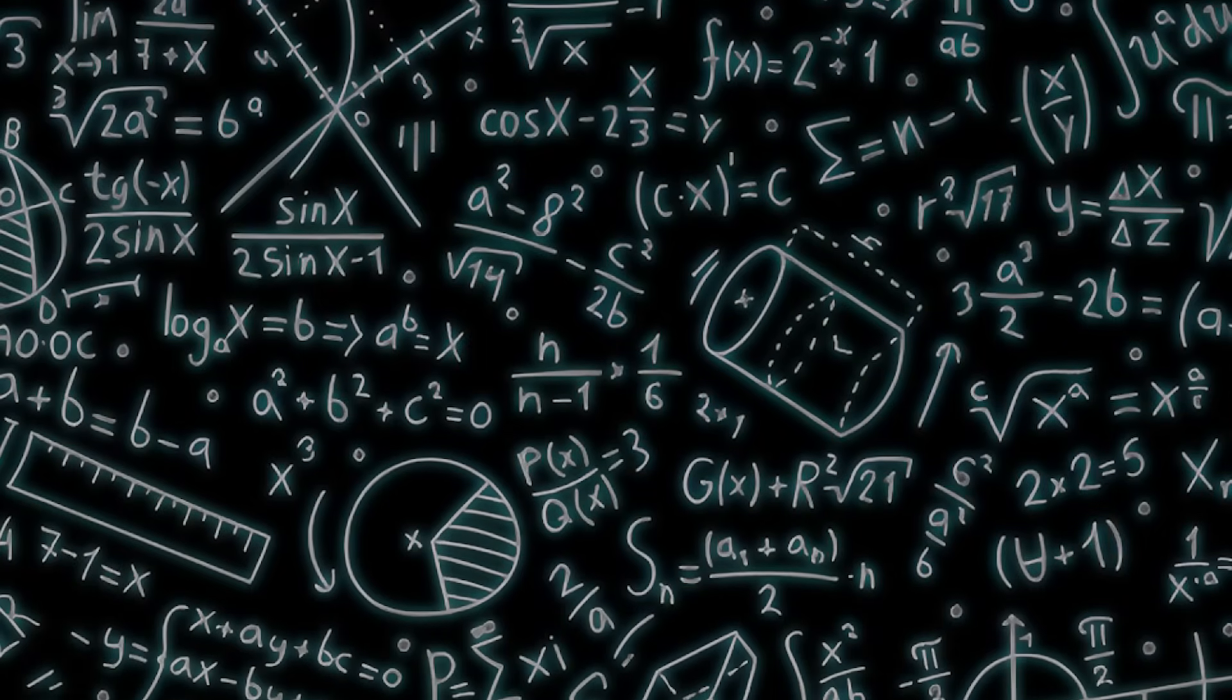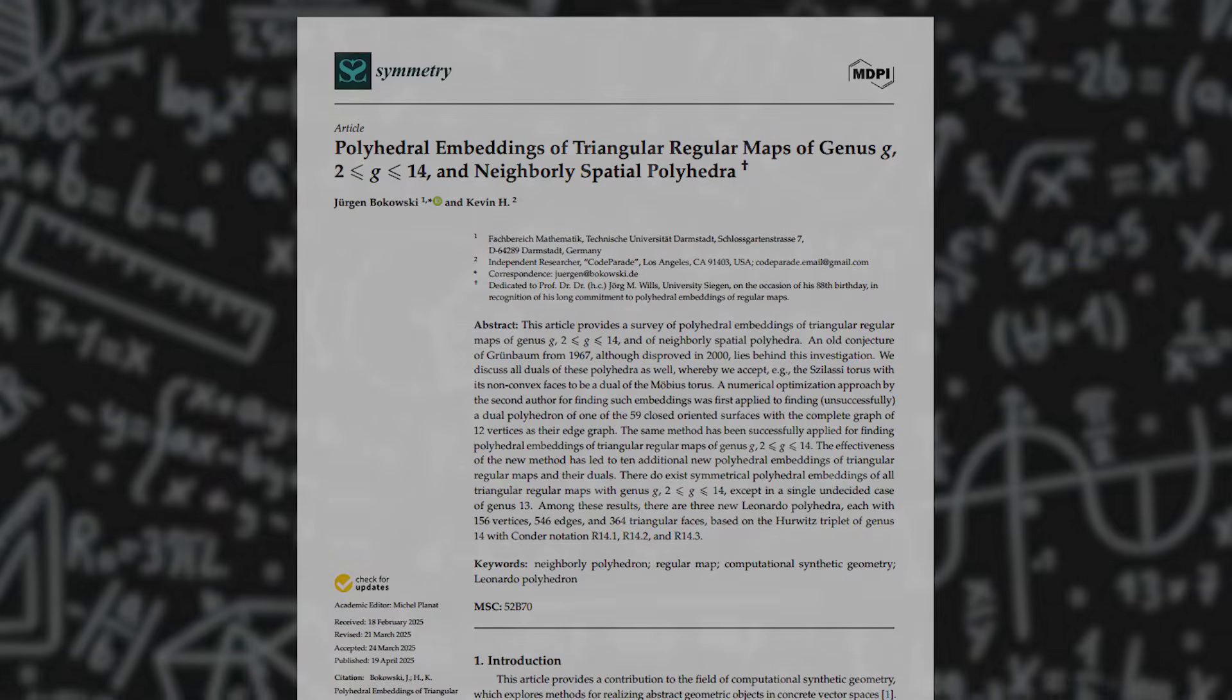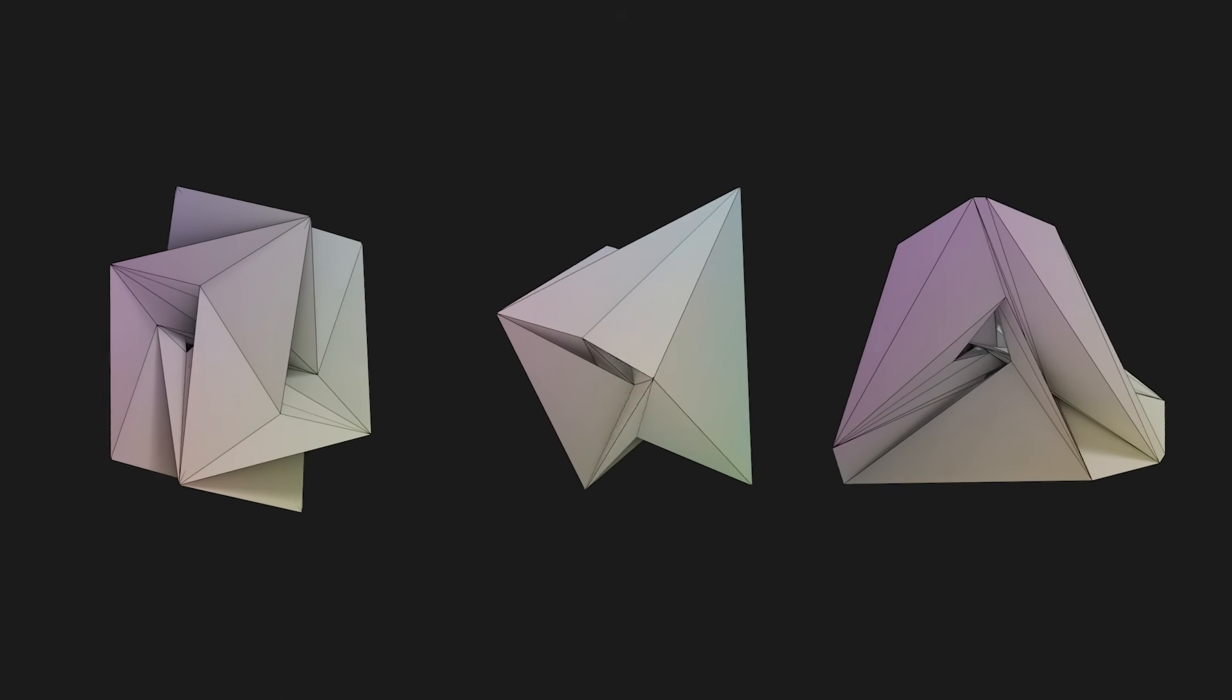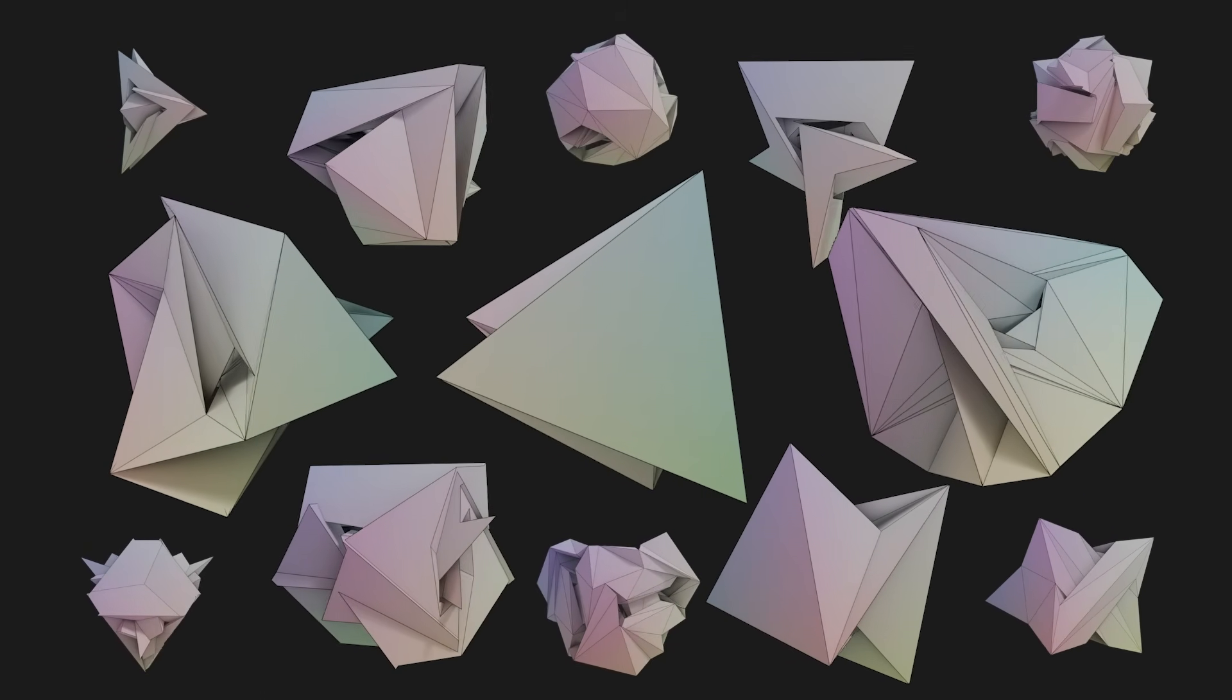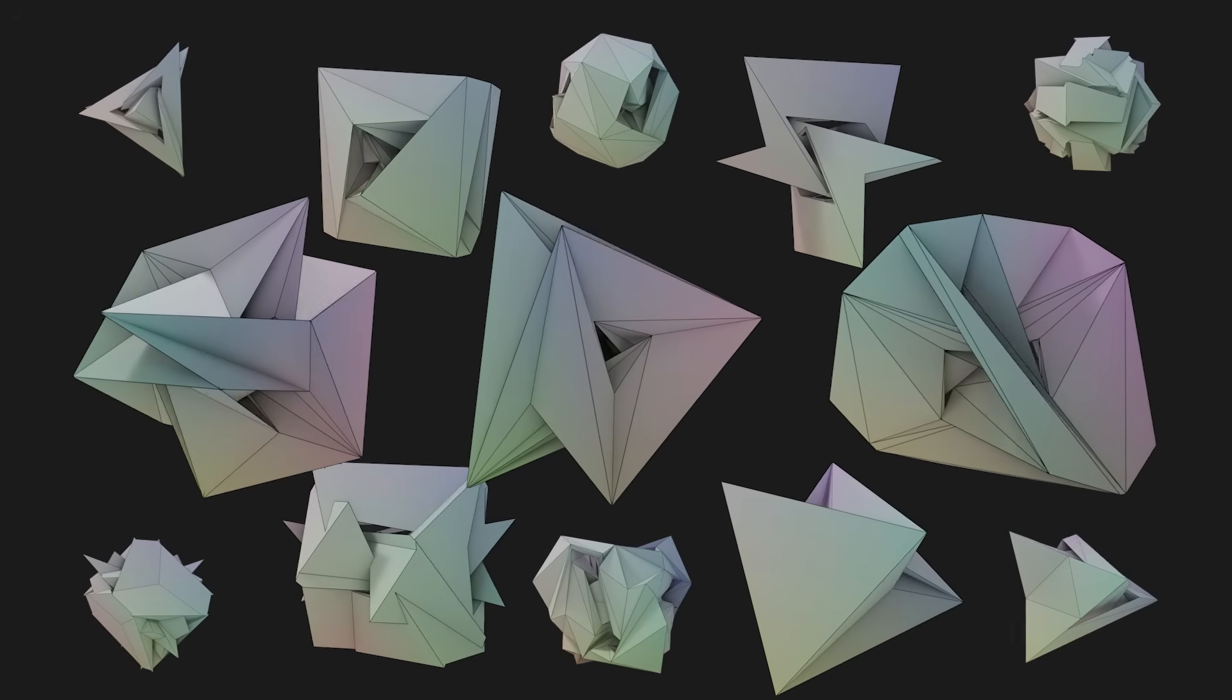Well, it finally happened! I got a math paper published! And I discovered not one, not two, not three or four, but more than 10 new kinds of polyhedra. But I don't even have a math degree, so how did I end up here?